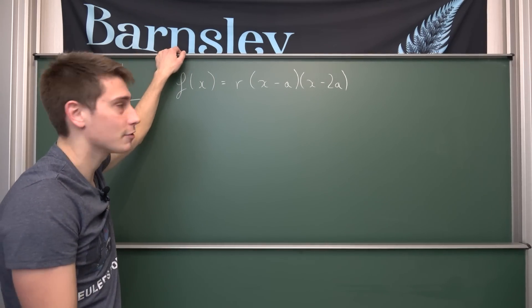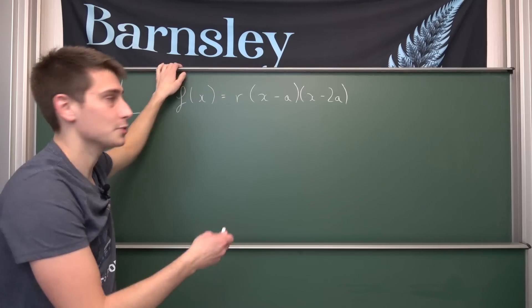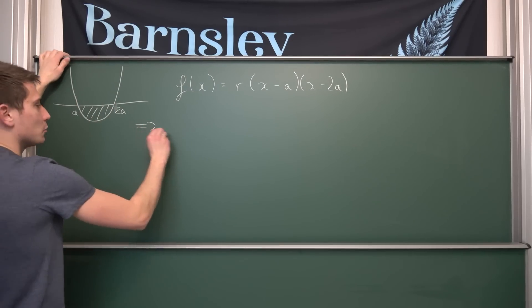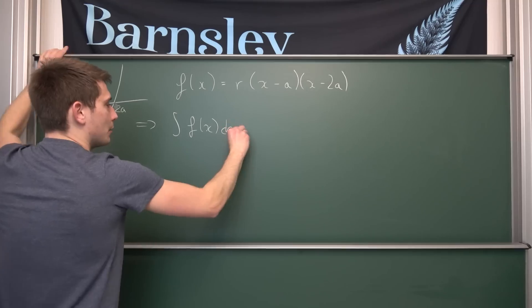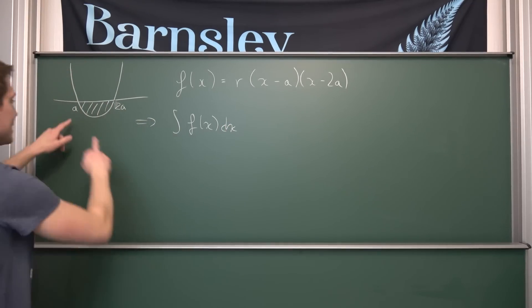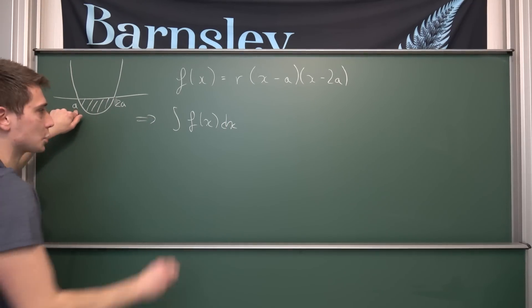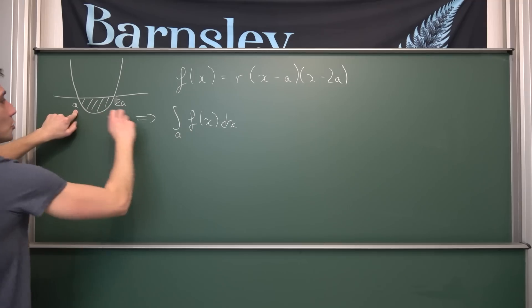Now we want to find out what the shaded area is. Finding out areas is fairly easy by using integrals. We are going to integrate our function f with respect to x. But what are the upper and lower bounds? Obviously they are the zeros of our function. So we are integrating from a to 2a.